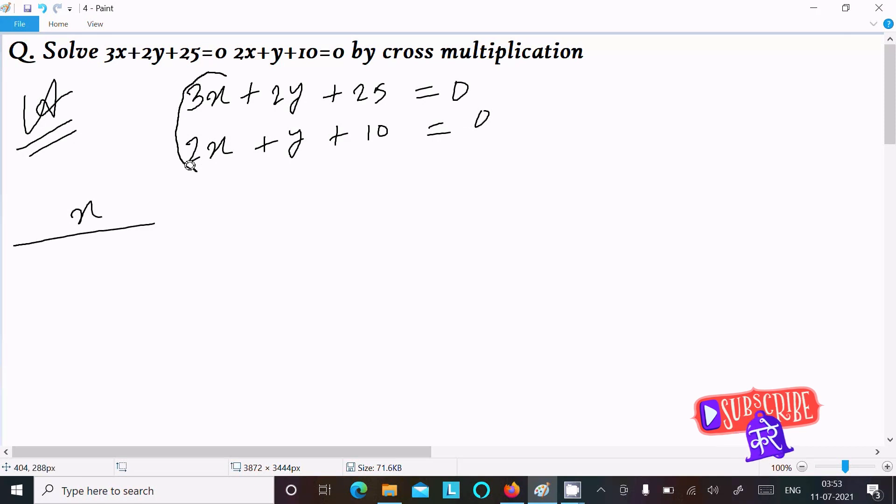Now we need to find the value of x. For x, you need to hide the terms of x and write the coefficient of y and the constant term. So coefficient of y is 2, next 25. There 1 is hidden with y, so this is 1 and here 10. Let's do the cross multiplication of the numbers.